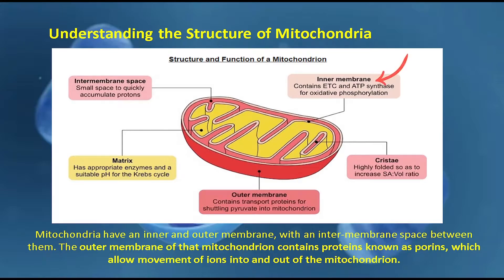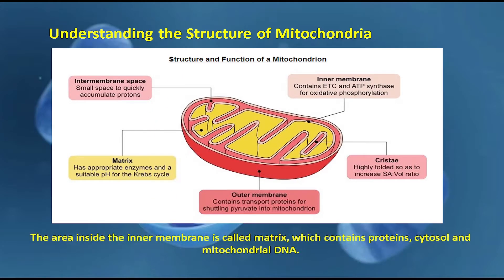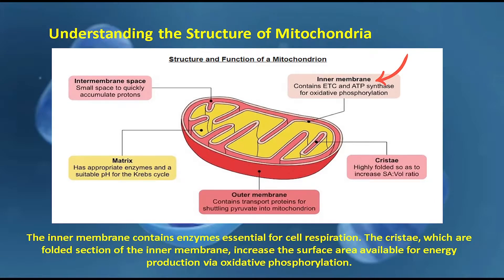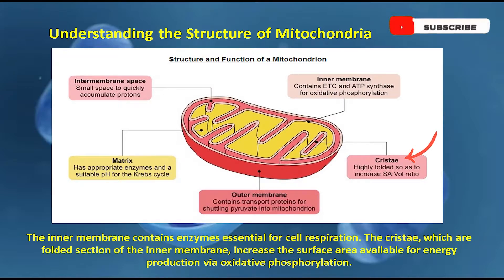Mitochondria have an inner and outer membrane with an intermembrane space between them. The outer membrane contains proteins known as porins, which allow movement of ions into and out of the mitochondrion. The area inside the inner membrane is called the matrix, which contains proteins, cytosol, and mitochondrial DNA. The inner membrane contains enzymes essential for cell respiration. The cristae, which are folded sections of the inner membrane, increase the surface area available for energy production via oxidative phosphorylation.